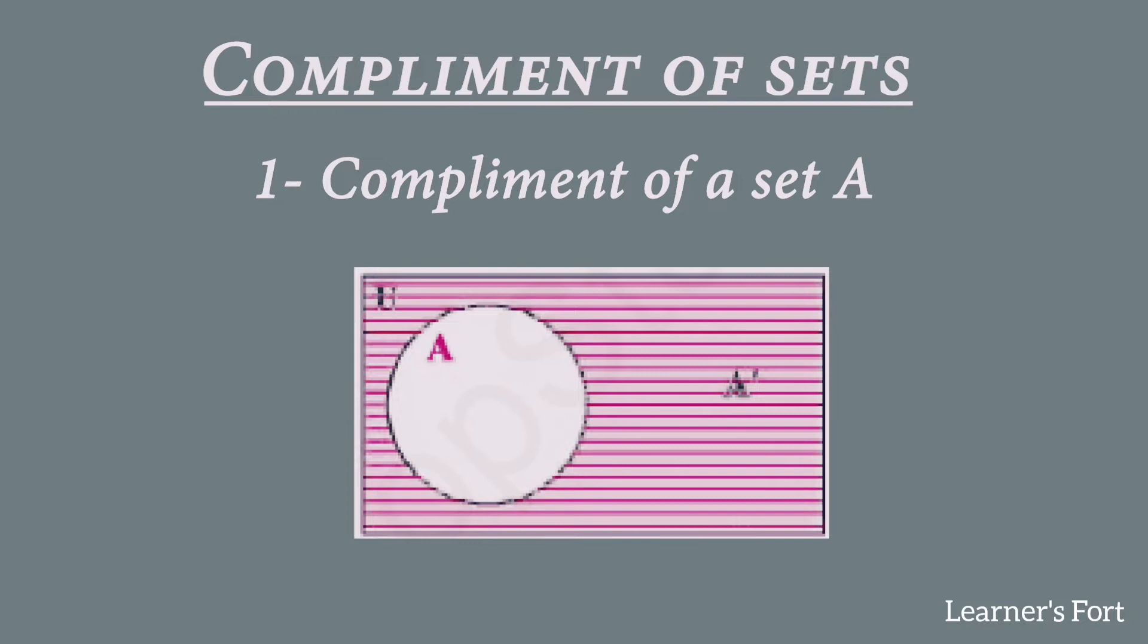A complement is equal to U minus A. In that case, the Venn diagram will be drawn only for set A. We're not going to draw set B inside that, because the complement is only related to the universal set and the set itself. No other set is involved.